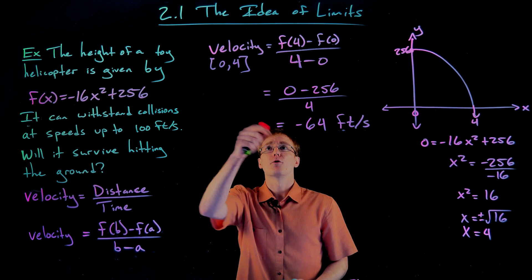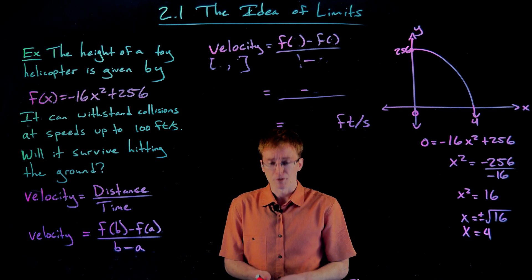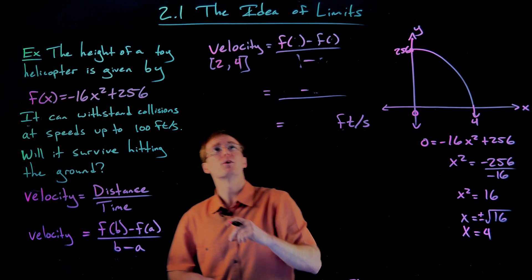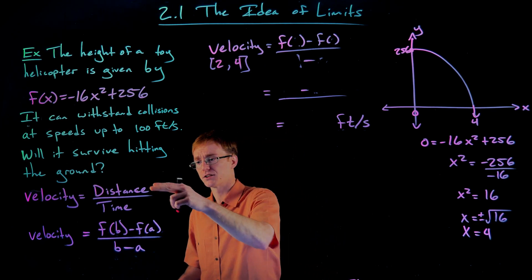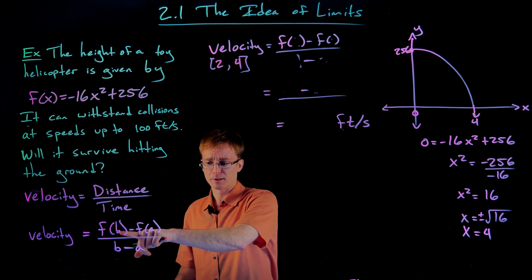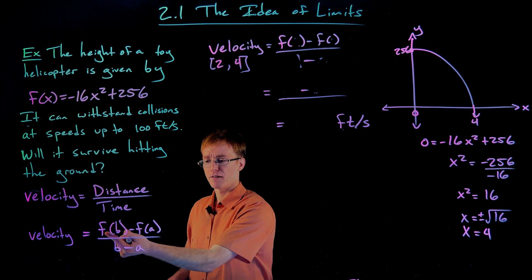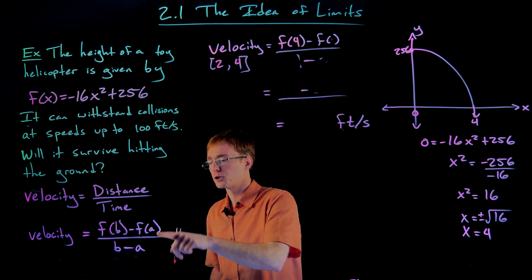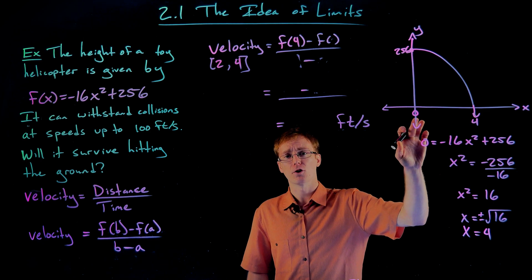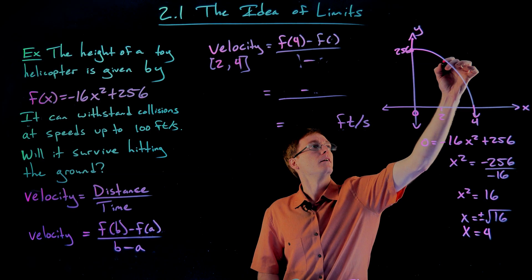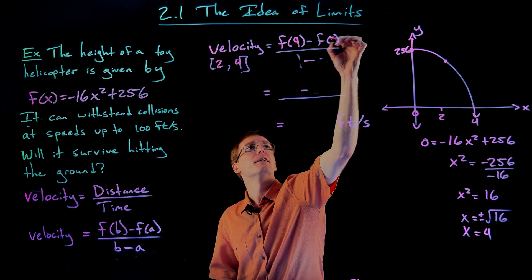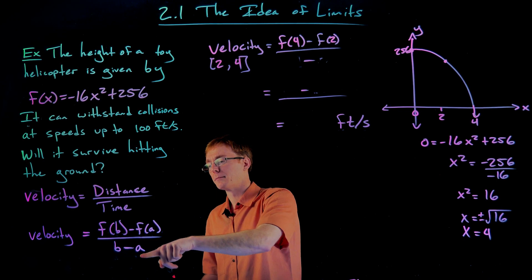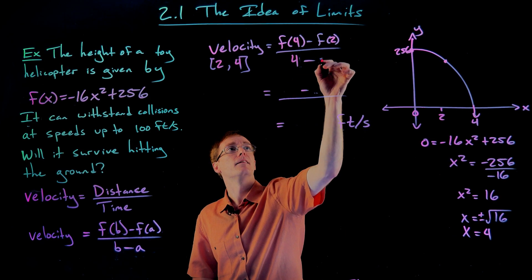We just change a few numbers in our formula. Now we're looking at the velocity from two seconds to four seconds. The formula is still f of b minus f of a over b minus a. Our final position is still f of four, but our initial position is now f of two — we're starting midway through at time equals two. So the numerator is f of four minus f of two, and the denominator is four minus two.